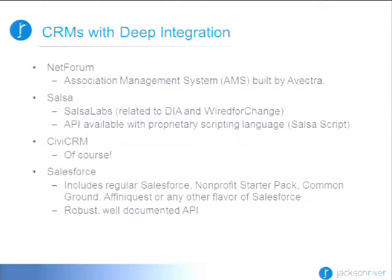Now we're going to talk about CRMs that have a more robust integration. We're talking about four. Netforum is an association management system, or AMS, built by Avectra. They actually have a variety of modules. Salsa — a lot of people know Salsa Labs — is a CRM wired for change; democracy in action. All of that is actually Salsa. They have an API available with a proprietary scripting language, and multiple modules that power the Salsa integration.